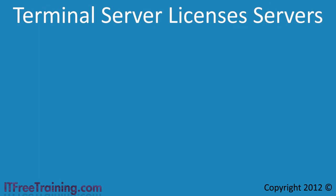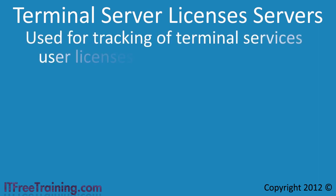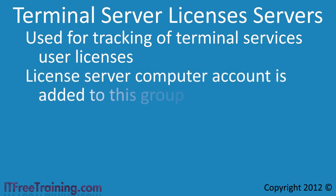The next group is Terminal Server License Servers. This group is used to provide tracking of user licenses in Active Directory. A user account in Active Directory has licensing information stored in it. In order for the terminal server licensing software to access this information, the license server needs to be added to this group. This group simply provides a bridge between the terminal server licensing server and the licensing information stored in Active Directory user accounts.